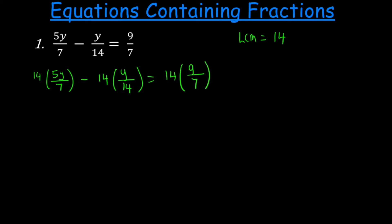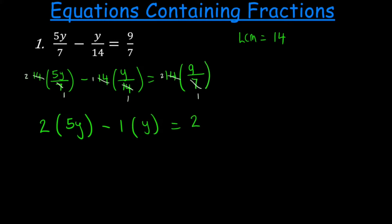We have multiplied each term by our lowest common multiple, which is 14. Now we simplify: 7 into 7 goes one time, 7 into 14 gives us 2, 14 into 14 gives 1. We rewrite this to get rid of the denominators. Our aim is to solve for y, so we rewrite: 2 times the numerator minus 1 times y equals 2 times 9. Expanding the brackets, 2 times 5y gives us 10y.